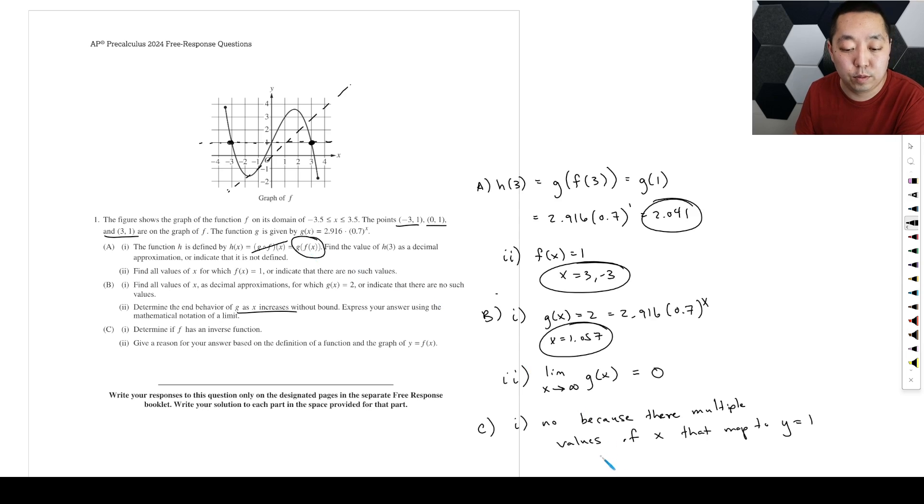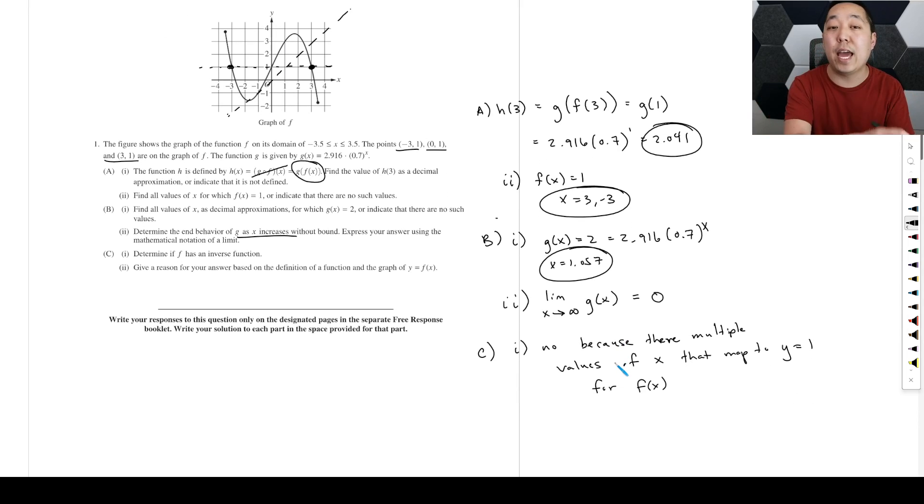As an example, for F of X, which means that if I know Y equals one, if there were an inverse, that would mean if I told you a Y value, you could automatically know what an X value is, right? But if I tell you for F of X, I give you a graph, I say the Y value is one, you cannot tell me uniquely what the X value corresponds to. And that's why the inverse doesn't exist because the X value could be negative three, zero or three, and that's not unique.